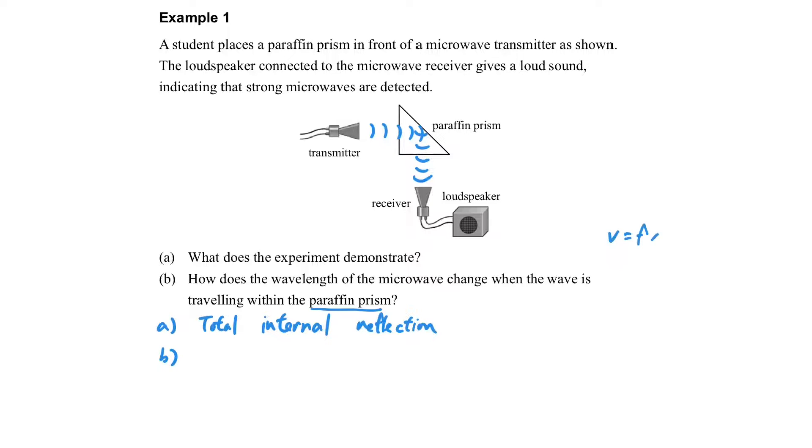How does the wavelength change? As we said, it travels fastest in air and slower in different mediums. When it travels slower in the paraffin prism, because the frequency is unchanged during the whole process, the wavelength will also decrease.